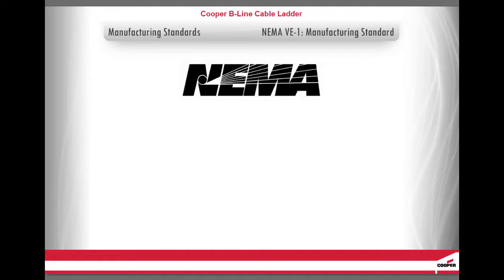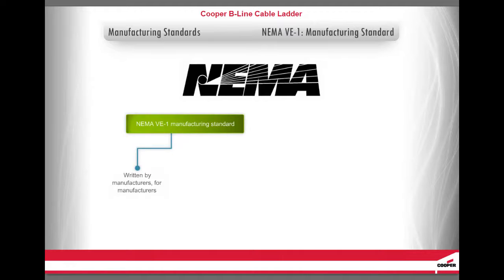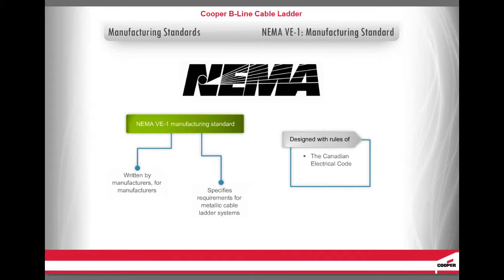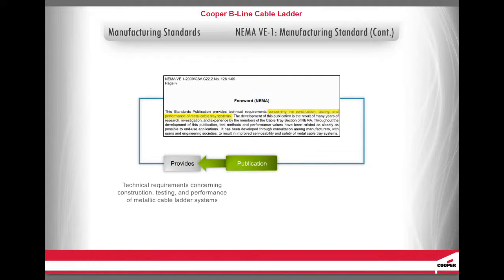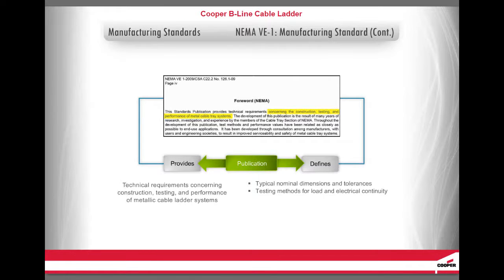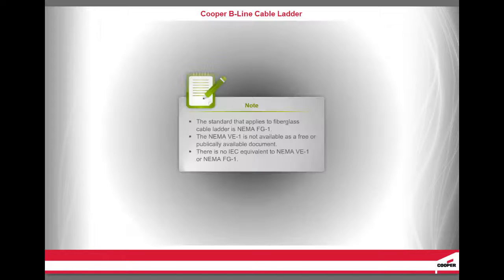The NEMA VE1 Manufacturing Standard was written by manufacturers for manufacturers. It specifies the requirements for metallic cable ladder systems designed for use in accordance with the rules of the Canadian Electrical Code and the National Electrical Code. The publication provides technical requirements concerning the construction, testing, and performance of metallic cable ladder systems. It defines typical nominal dimensions and tolerances, testing methods for load and electrical continuity, material definitions by the American Society for Testing and Materials, and labeling requirements. The standard that applies to fiberglass cable ladder is NEMA FG-1.